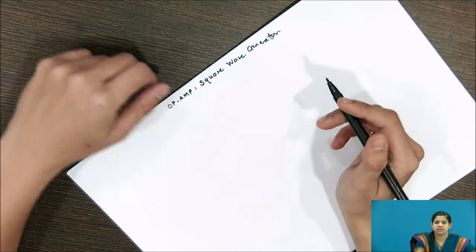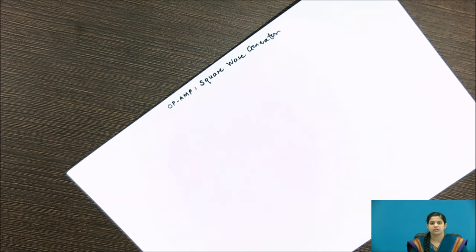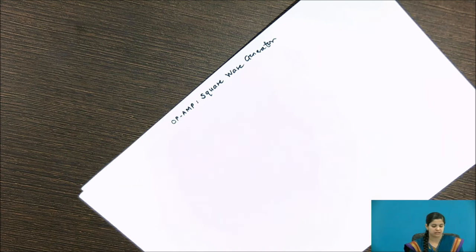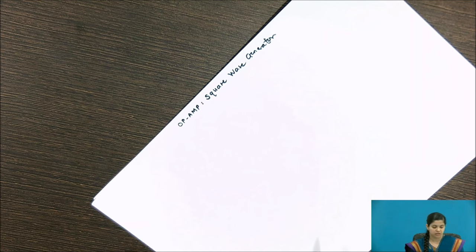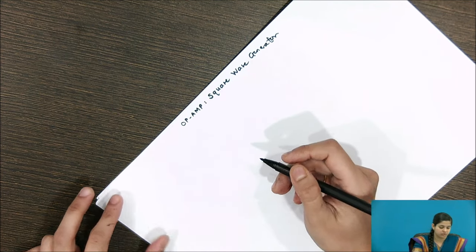In the previous lecture we have seen the different kinds of sinusoidal oscillators using operational amplifiers, which generally give the output as a sine wave or cosine wave. Now in this lecture we will see the non-sinusoidal waveform oscillator using an operational amplifier — it will be the square wave generator. Let us first see the circuit of the square wave generator.